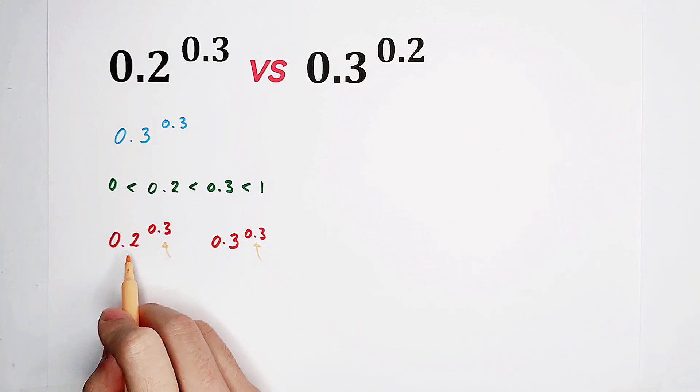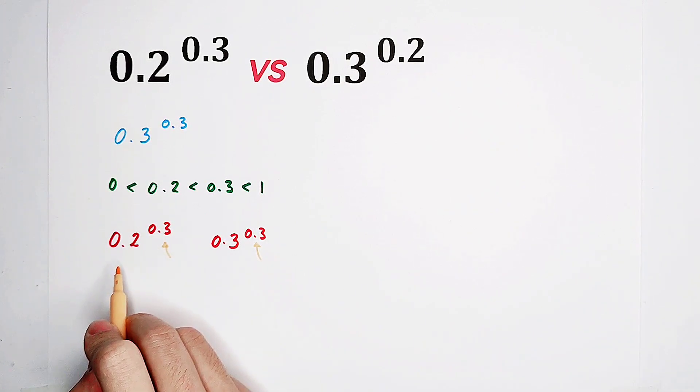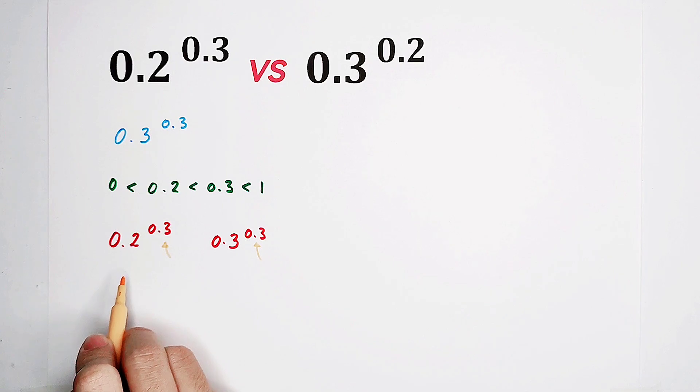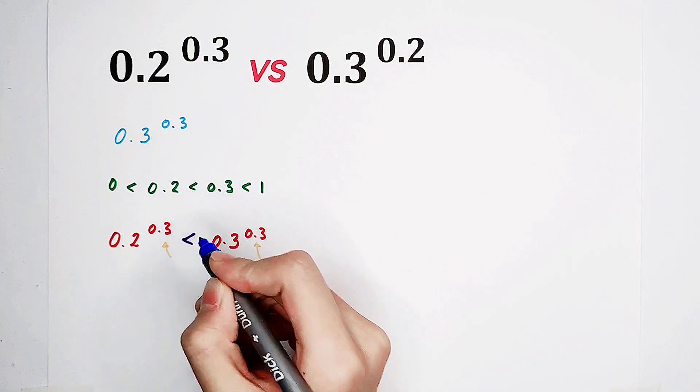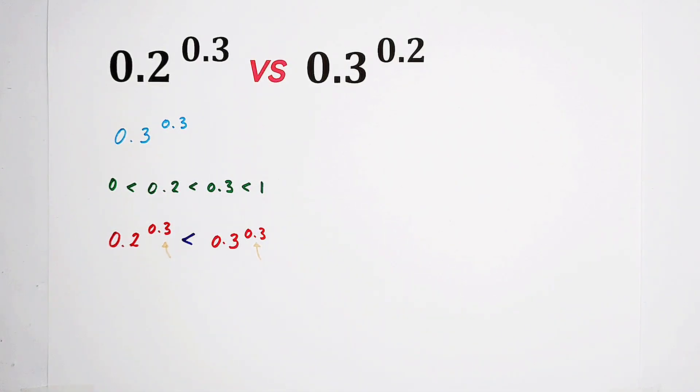The base on the left-hand side, 0.2, is of course smaller than the base on the right-hand side, 0.3. So they have the same exponent. That means, the one whose base is bigger has the bigger value. So 0.3 to the power of 0.3 is larger.